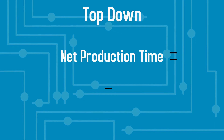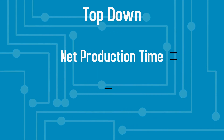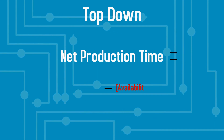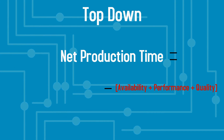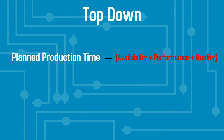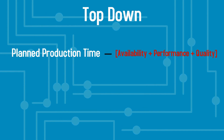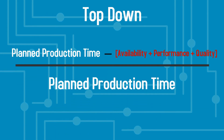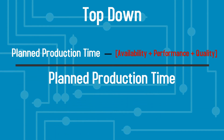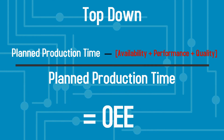In this method, net production time is calculated by subtracting the three OEE components — availability, quality, and performance — from the planned production time. The final formula is then: planned production time minus availability, quality, and performance, divided by planned production time.